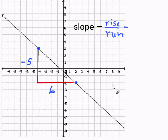Now, I'm going to substitute in these numbers into my rise over run. My rise would be negative 5, since I'm going down 5. And my run will be positive 6, since I'm going to the right 6.